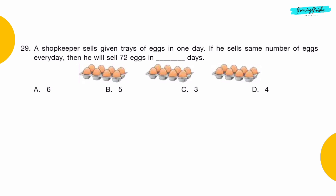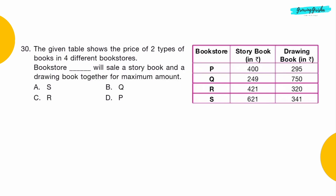Question 29: A shopkeeper sells given trays of eggs in 1 day. If he sells the same number of eggs every day, then he will sell 72 eggs in dash days. Option C: 3 days.